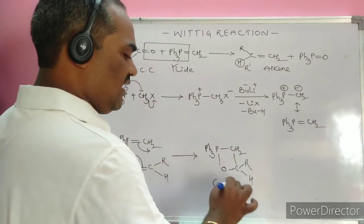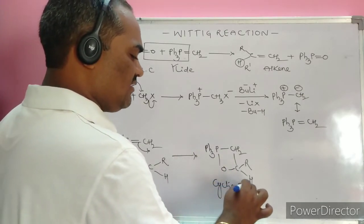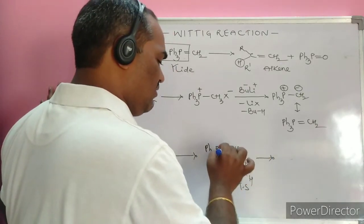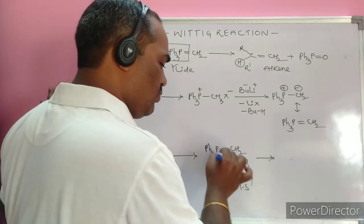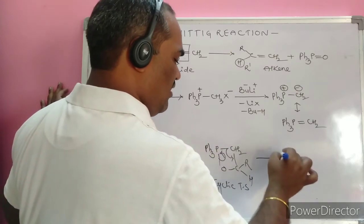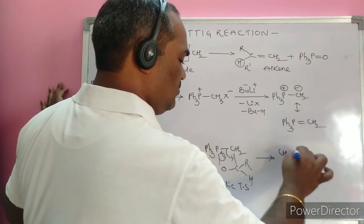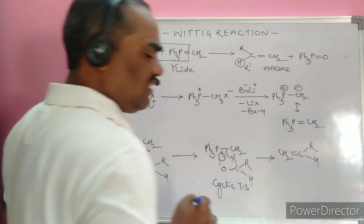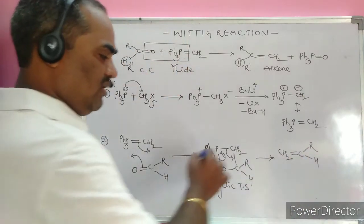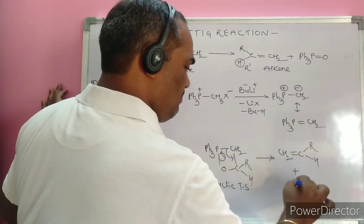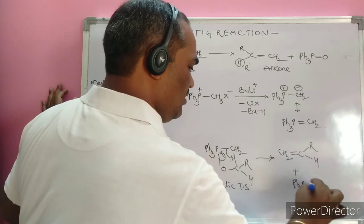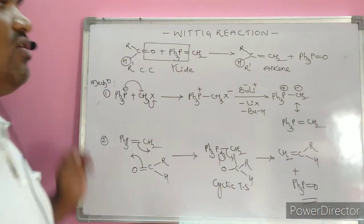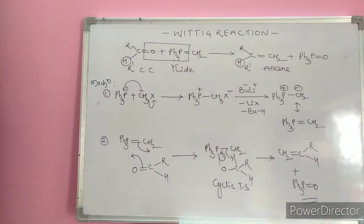This cyclic intermediate immediately breaks down: the bonds cleave to form CH₂=C(R)(H) — the alkene product — and Ph₃P=O, triphenylphosphorus oxide, as the other product.